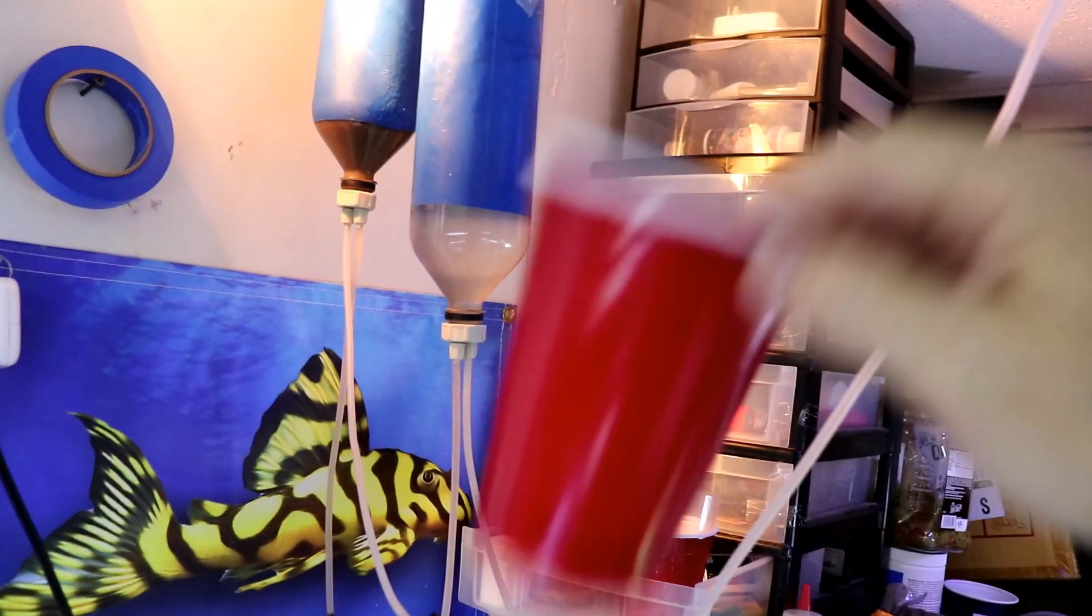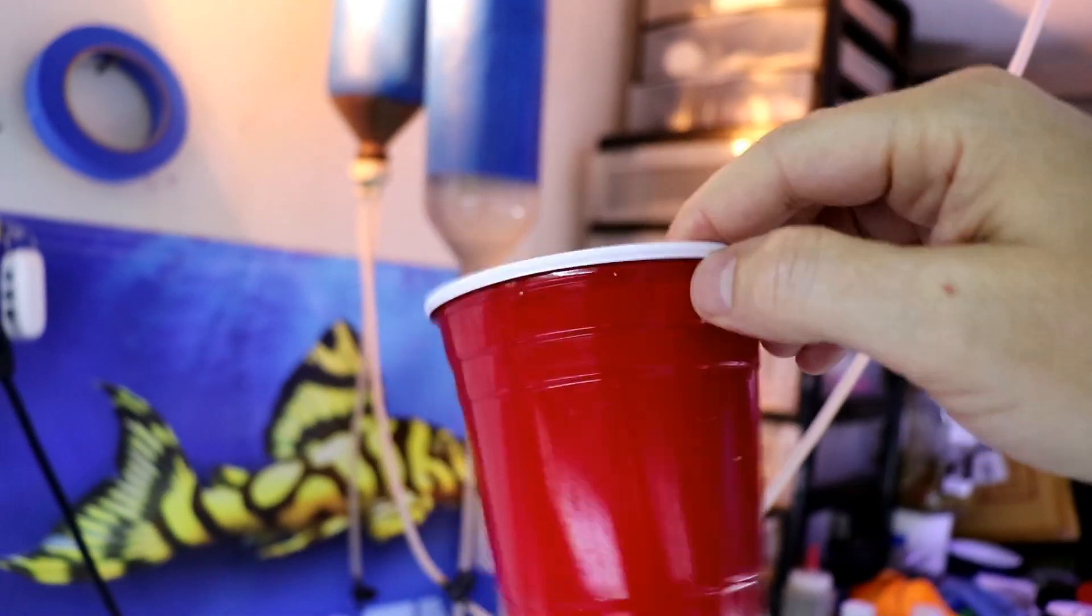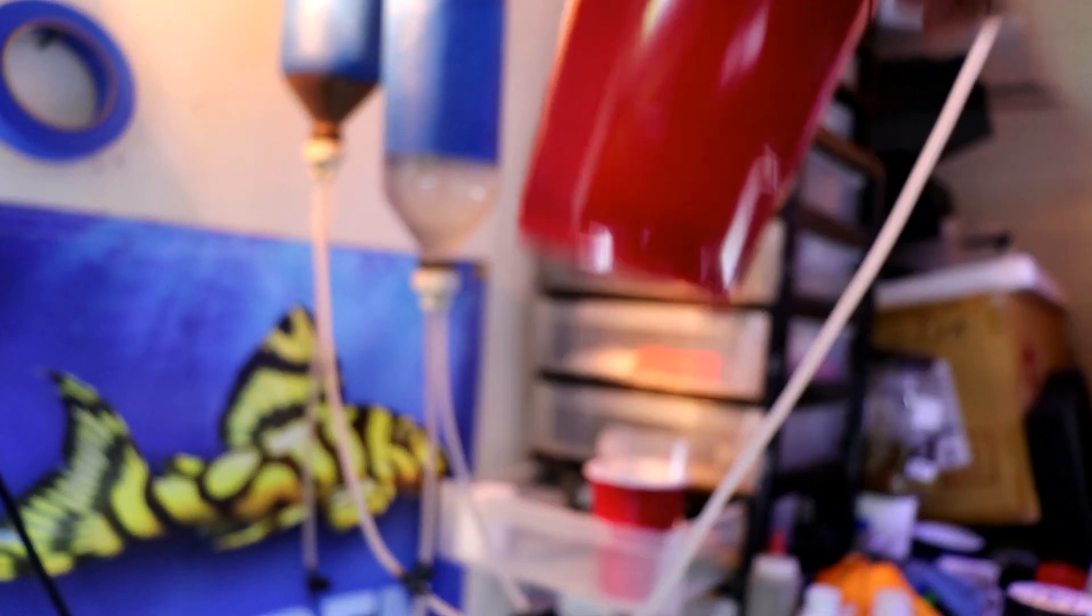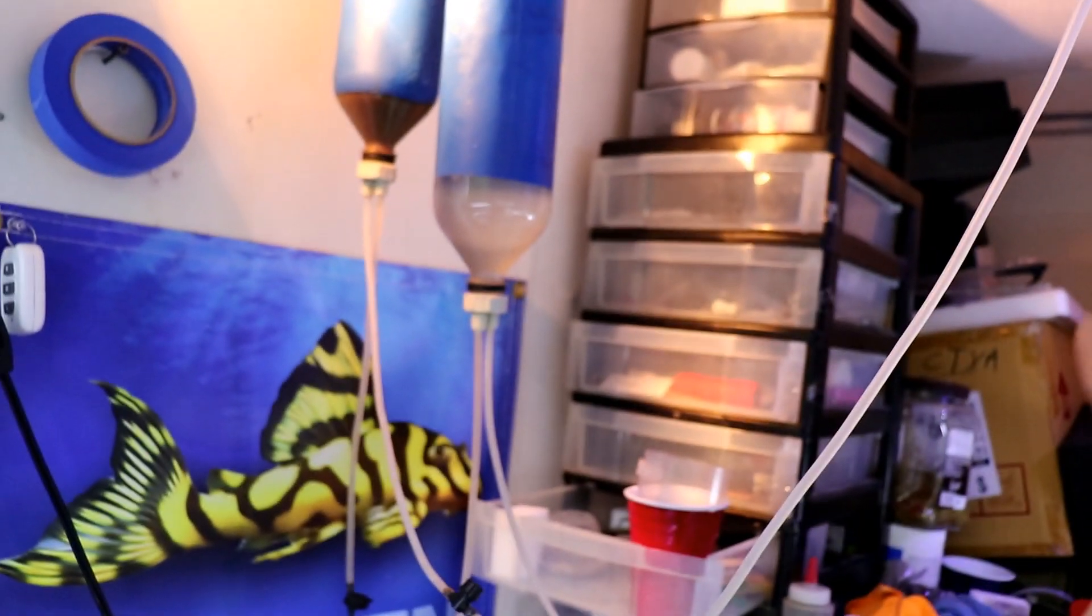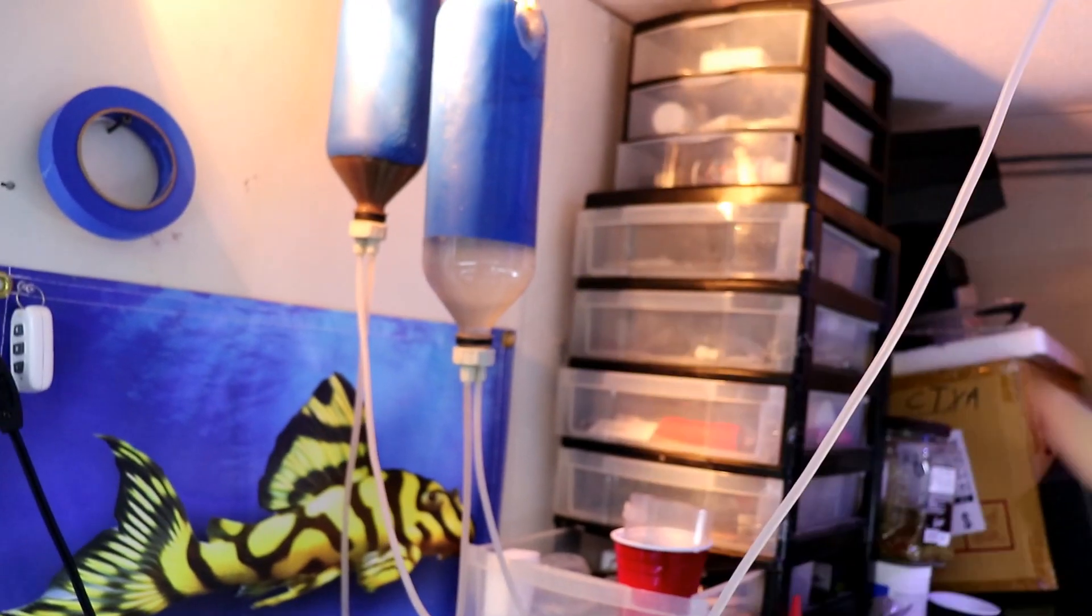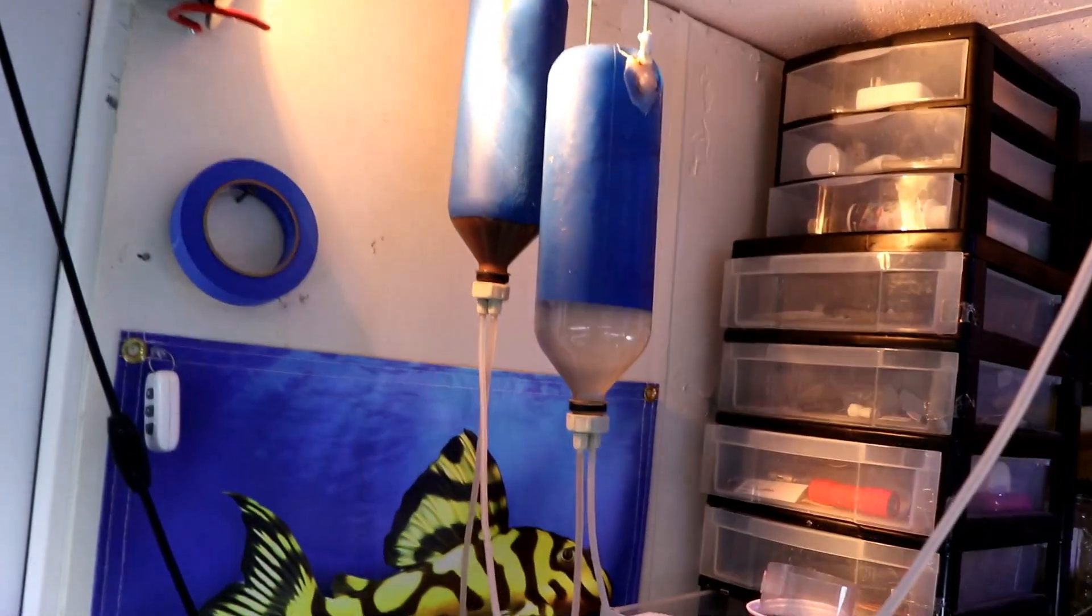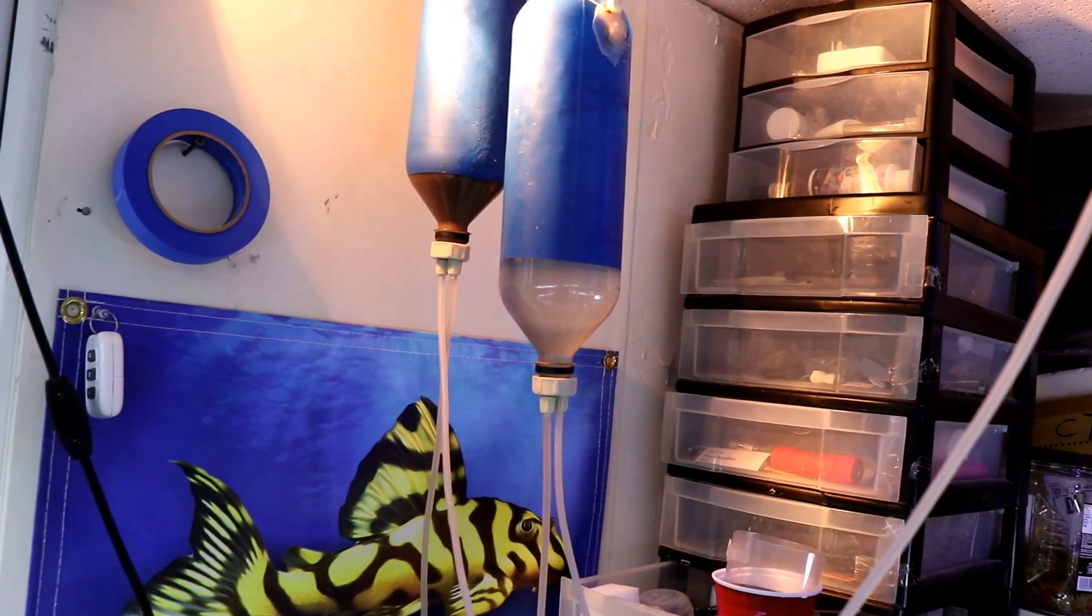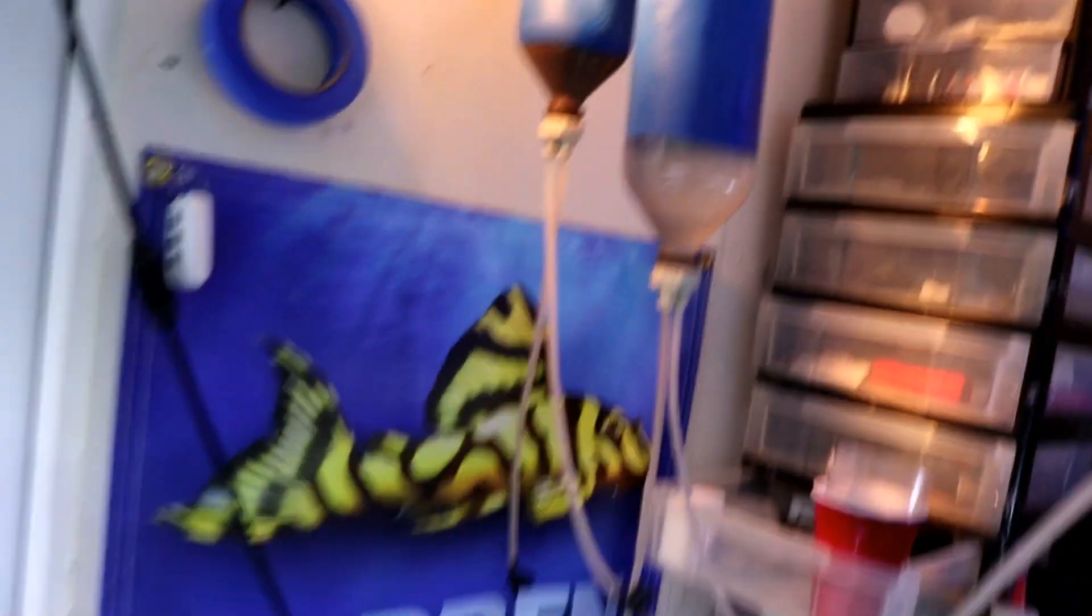Make sure you're using some type of dechlorinated water because the chlorine and chloramines will kill the baby brine shrimp. So I take this, fill that up with two of these, I fill both of them up and then I go ahead and bring it in here, hang them, and then turn the air and then get it bubbling.